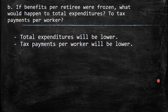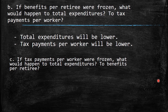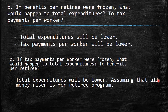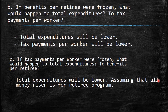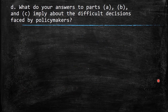The third scenario: if tax payments per worker were frozen, what would happen to total expenditures and benefits per retiree? Again, when we freeze that, the total expenditures will be lower. Assuming all money raised is for this particular retirement program, then the tax payment per worker will be lower.